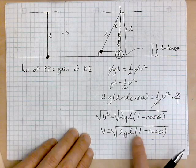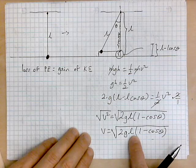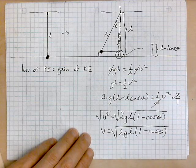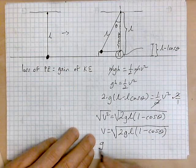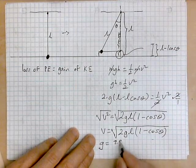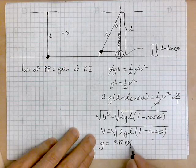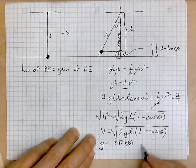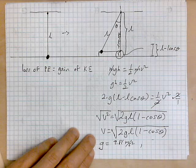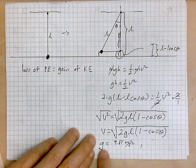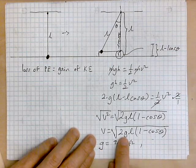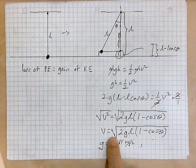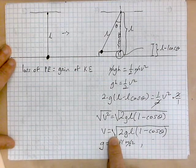This expression tells us that the speed depends on the angle and on the length of the string, since both are present in the expression. Of course it depends on g — for Earth we take g to be 9.81 meters per second squared. If you perform this experiment on the moon, you would have a different g; on the moon it's about a sixth of what it is on Earth, so that would also affect the velocity.